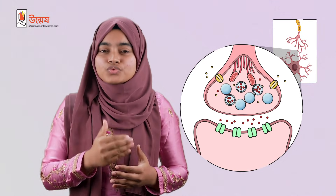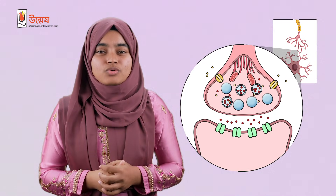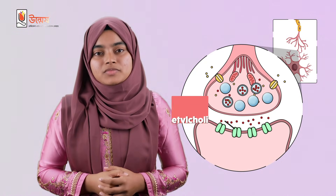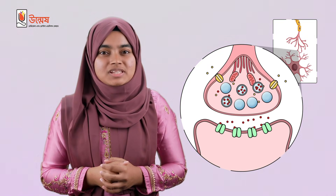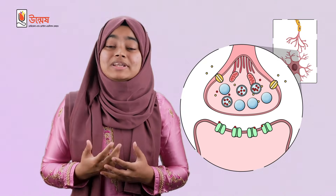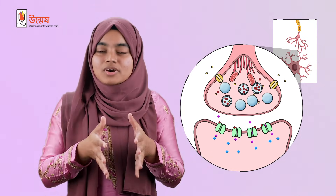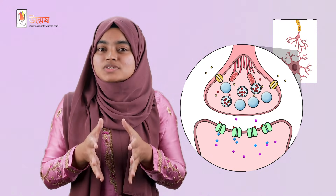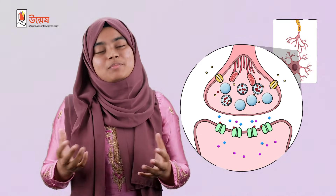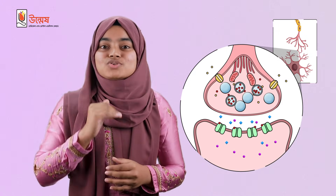Acetylcholine will move through the synaptic cleft to the membrane of the postsynaptic neuron. In the membrane of the postsynaptic neuron, some proteins are present to which acetylcholine can bind — these are called acetylcholine receptors. So acetylcholine binds to the receptors in the postsynaptic neuron. In response to that, the permeability of the membrane of the postsynaptic neuron increases. Then sodium ions, present in higher concentration outside the neuron, will enter the neuron, and potassium ions, present in higher concentration inside the neuron, will exit. Action potential will develop in the postsynaptic neuron, and our motive to transmit impulse from one neuron to another is accomplished.